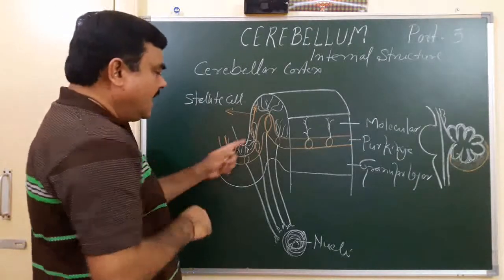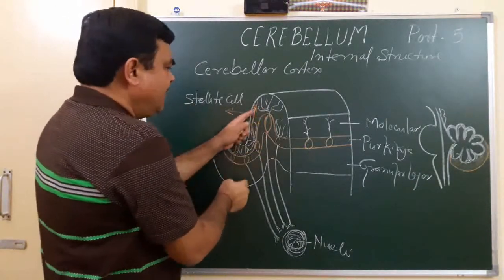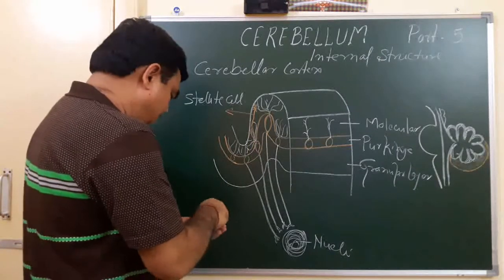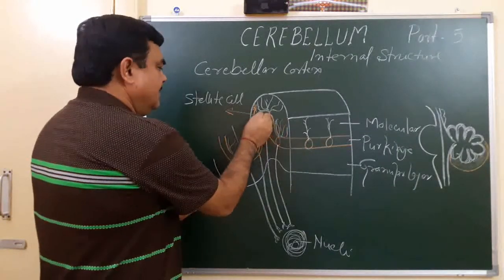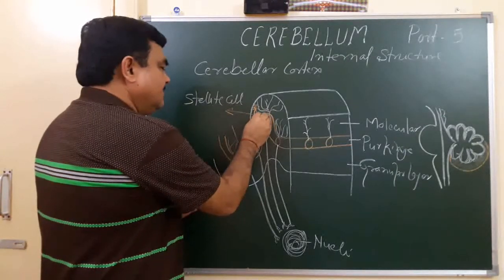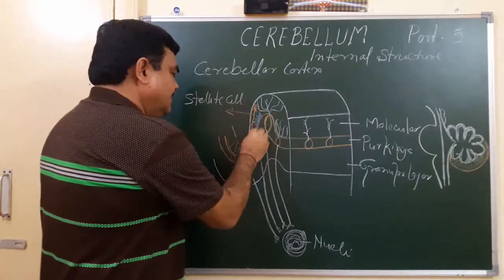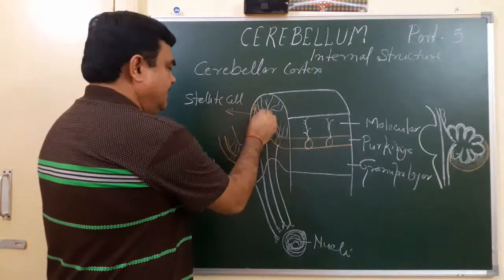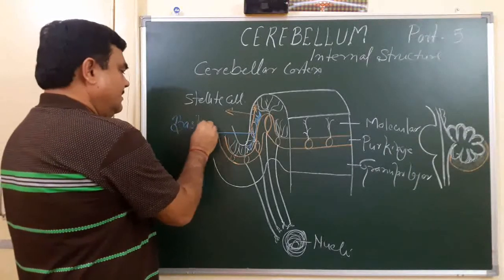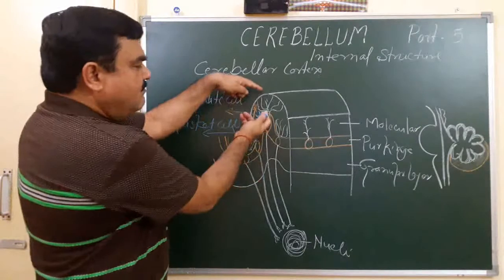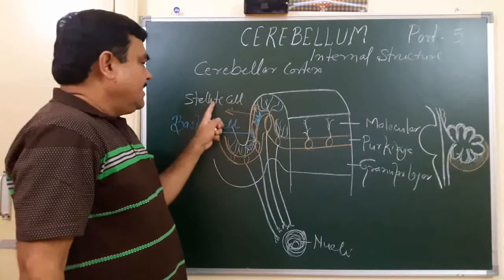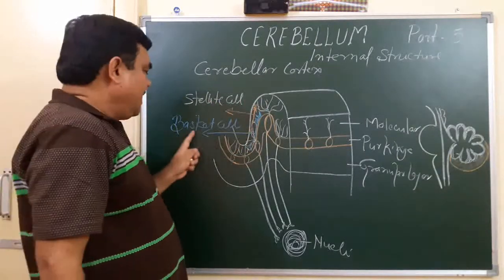The stellate cell runs parallel to the surface, transversely. Another cell here is like a basket — this cell is the basket cell. Here are the dendrites and axon of the basket cell.